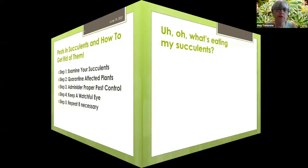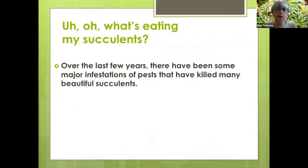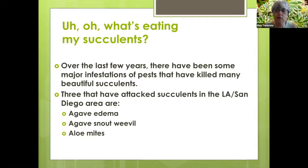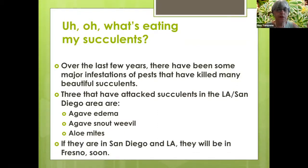Over the last few years there have been some major infestations of pests that have killed many beautiful succulents. Three that have attacked succulents in the Los Angeles and San Diego area are agave edema, agave snout weevil, and aloe mites. If they're in San Diego and LA, they will be in Fresno soon — and the aloe mites have already arrived.